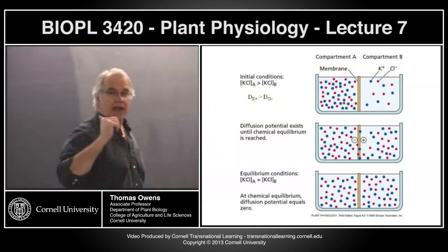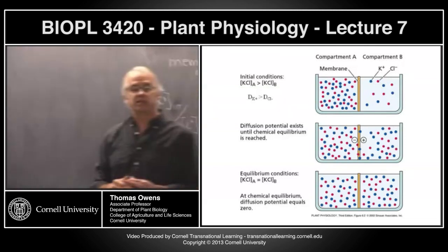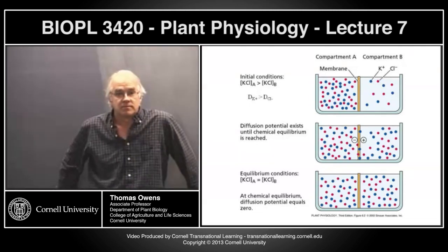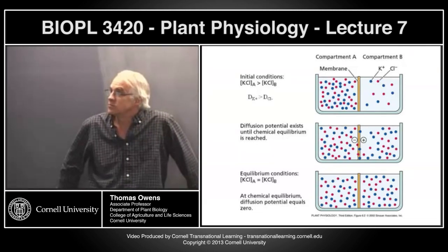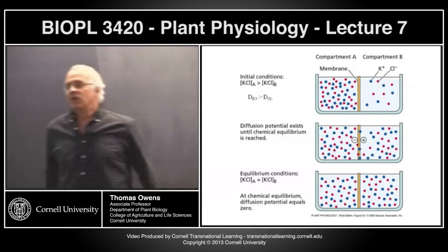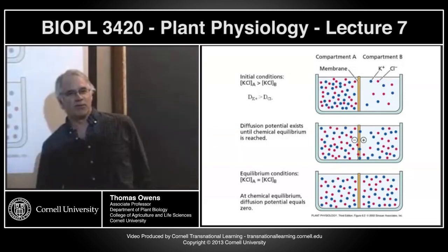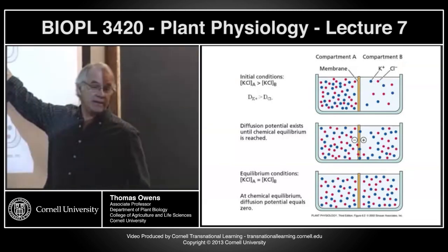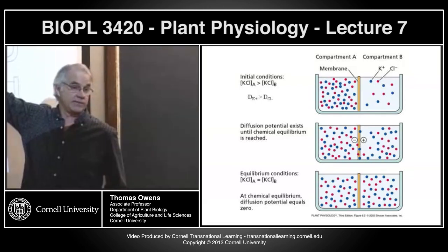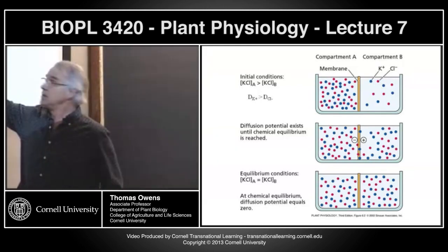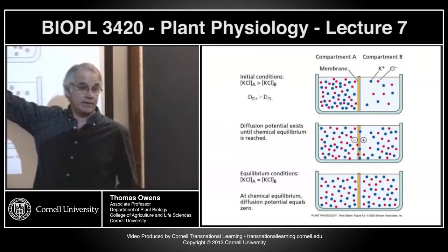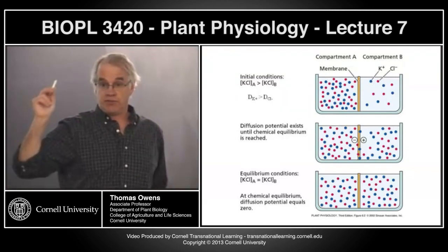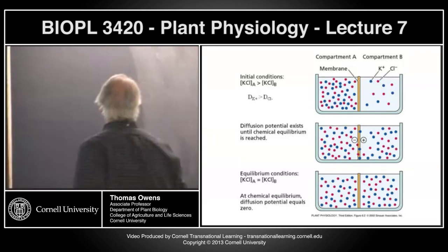What are the consequences of that differential transport for membrane potential? If potassium is moving across more quickly, there's going to be a net positive charge on one side and a net negative charge on the other — positive where there's an excess of potassium, negative where there's an excess of chloride. This membrane potential due to differential diffusion of charged species is referred to as a diffusion potential.